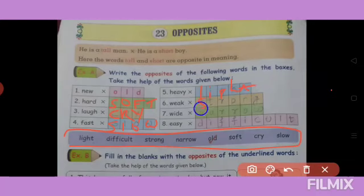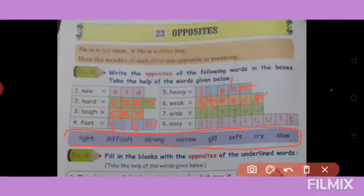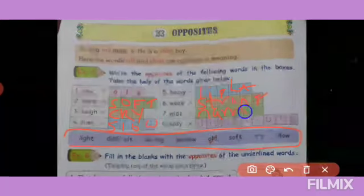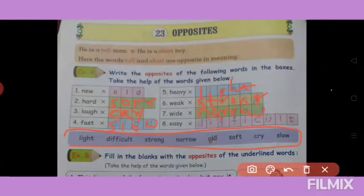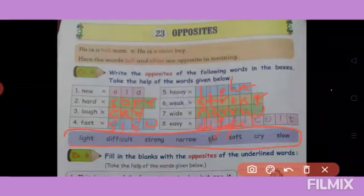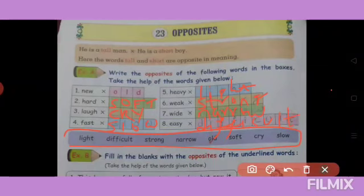Weak — strong. S-T-R-O-N-G. Strong. White — narrow. N-A-R-R-O-W. Narrow. Easy — difficult. D-I-F-F-I-C-U-L-T. Difficult.